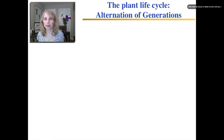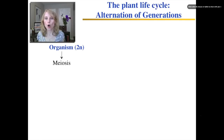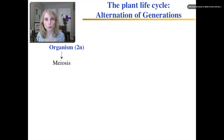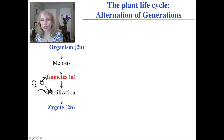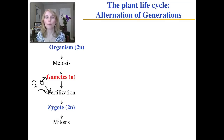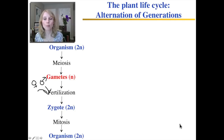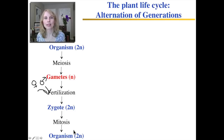First, let's take the animal life cycle. We start out as a multicellular diploid organism. Special cells within this organism undergo meiosis, which produces the haploid gametes. You have both female and male gametes, which unite in fertilization to produce the diploid zygote. Then the zygote divides by mitosis into a baby and eventually the adult, making a new multicellular diploid organism, which can begin this life cycle all over again.